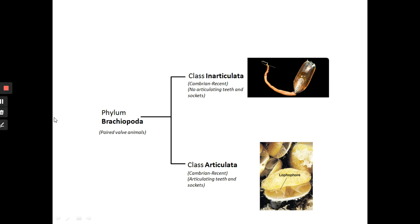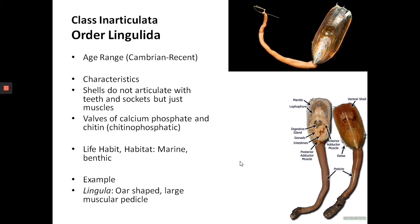Moving on to taxonomy: Phylum Brachiopoda are bivalved animals with a lophophore, and can be divided into two classes. The first is Class Inarticulata and the second is Class Articulata — the articulate and inarticulate brachiopods. We are not talking about verbal articulation; we're talking about how the two valves are connected, i.e., how they are articulated. Let's look at Class Inarticulata, focusing on one order: the Lingulina.